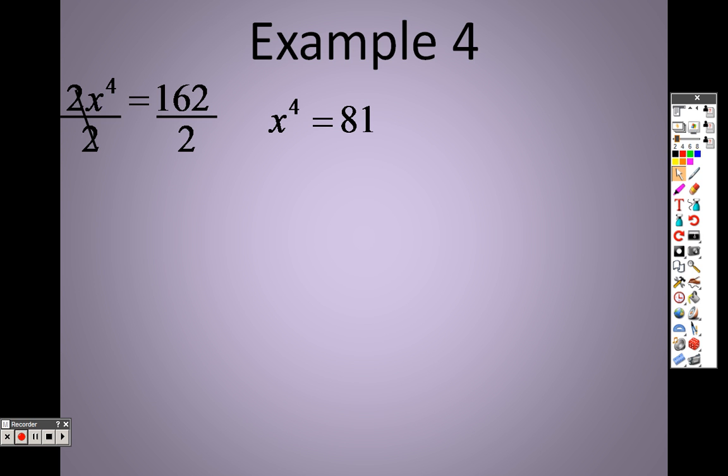Well, the opposite of something to the 4th power is the 4th root. If I had something to the 5th power, the opposite of that is the 5th root. That's why when I have x squared, the opposite of that is a square root. If I have something cubed, the opposite is the cube root. So since I have x to the 4th, I could take the 4th root.